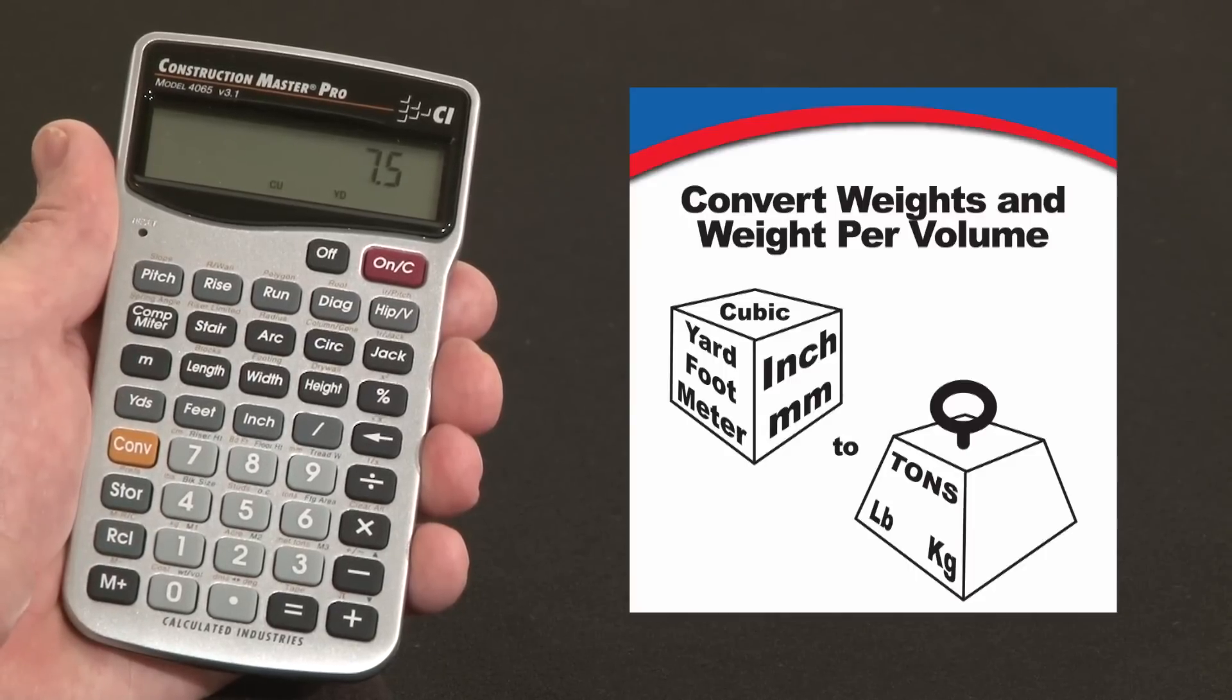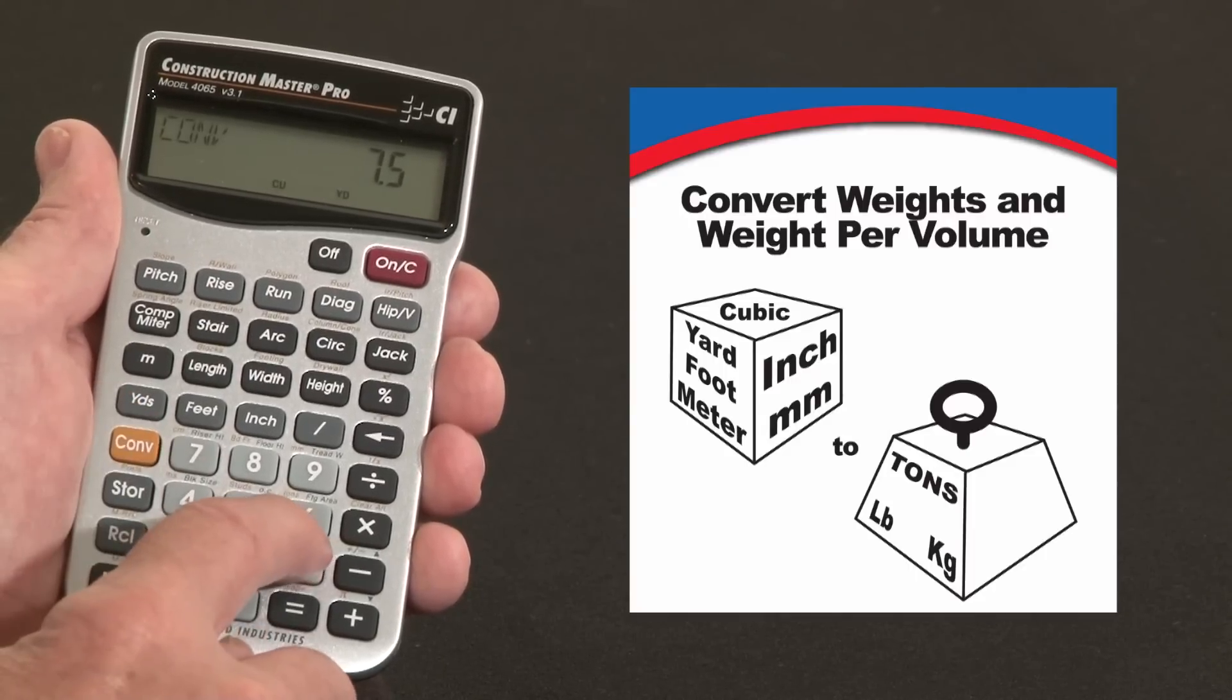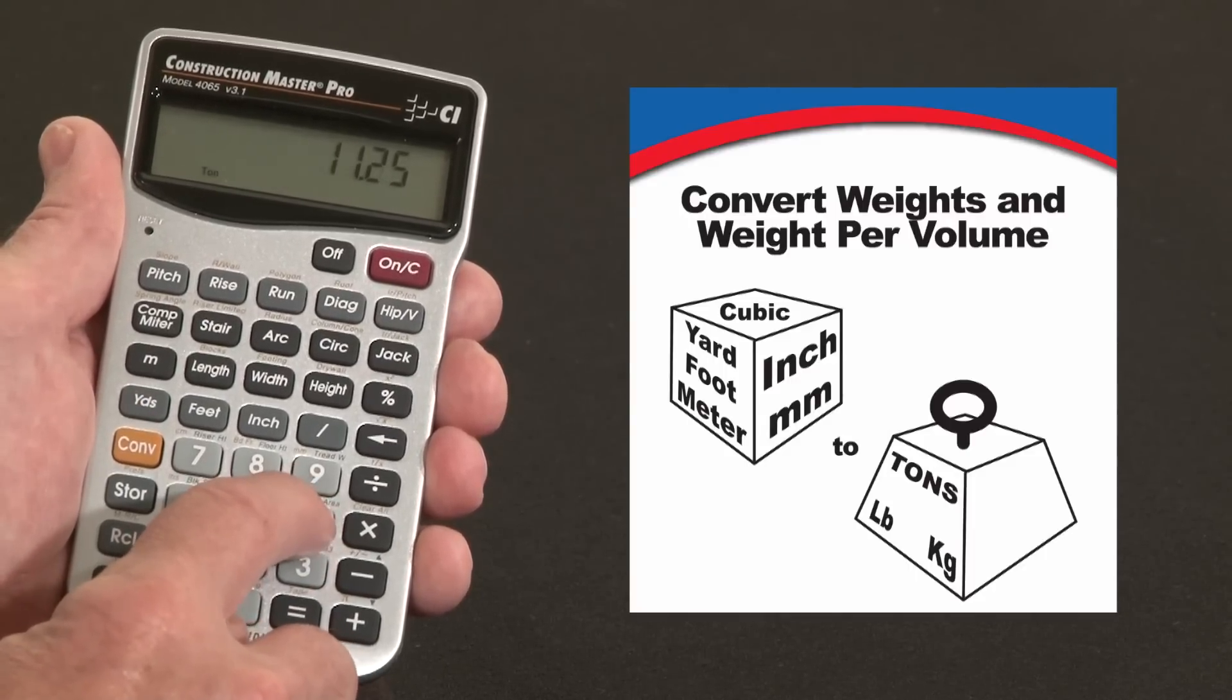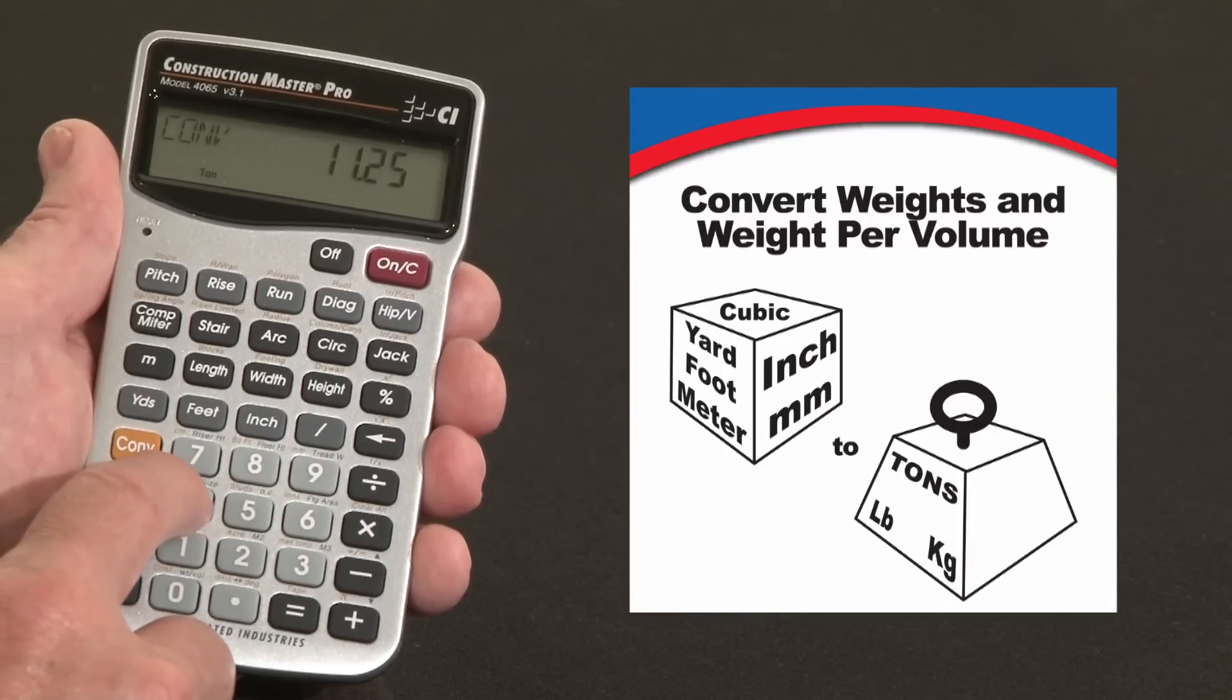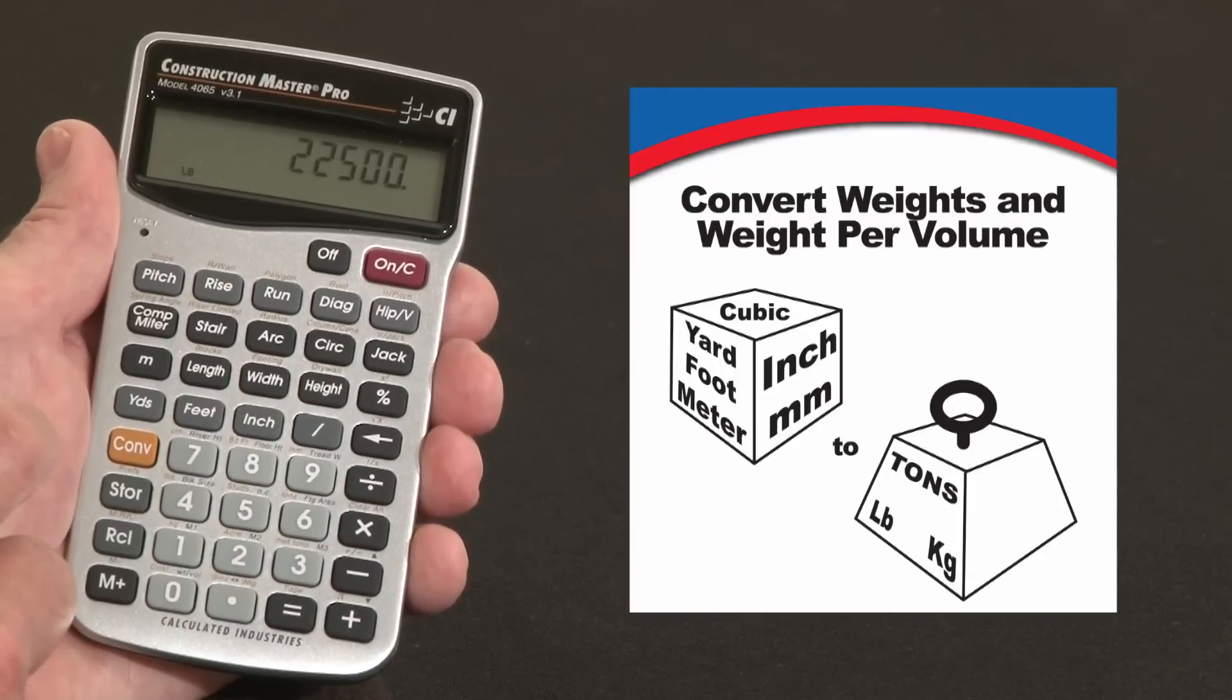Now we want to convert that to tons. So convert, over the 6 key it says tons, 11.25 tons. I can also convert that to pounds if I like over the 4 key, 22,500 pounds.